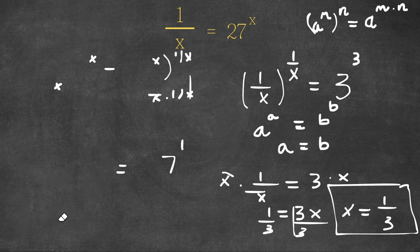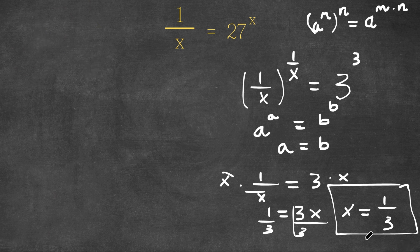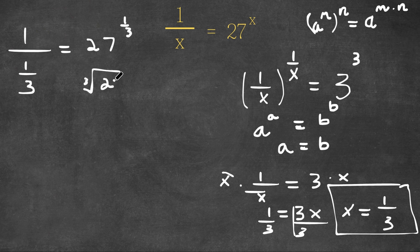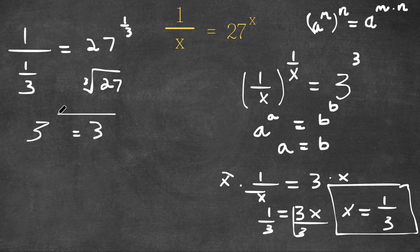Now, to check, let's plug x into this equation. We have 1 over 1 over 3 is equal to 27 to the power of 1 over 3. Now, 27 to the power of 1 over 3 is the same thing as the cube root of 27, and the cube root of 27 is 3. And 1 over 1 over 3 is the same thing as 3. So 3 equals 3, which confirms our solution is correct.